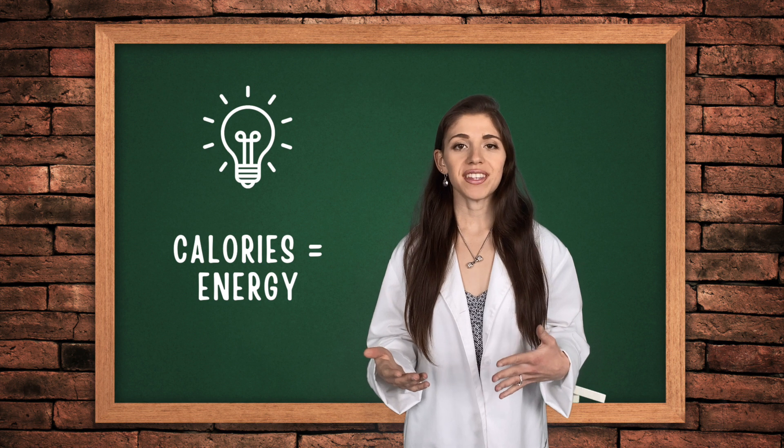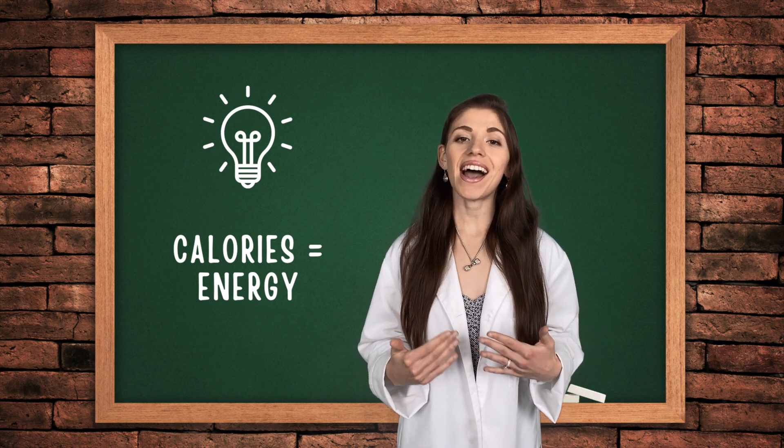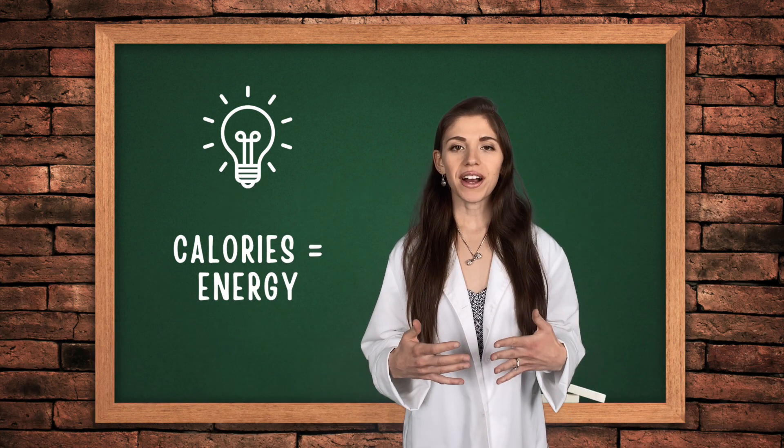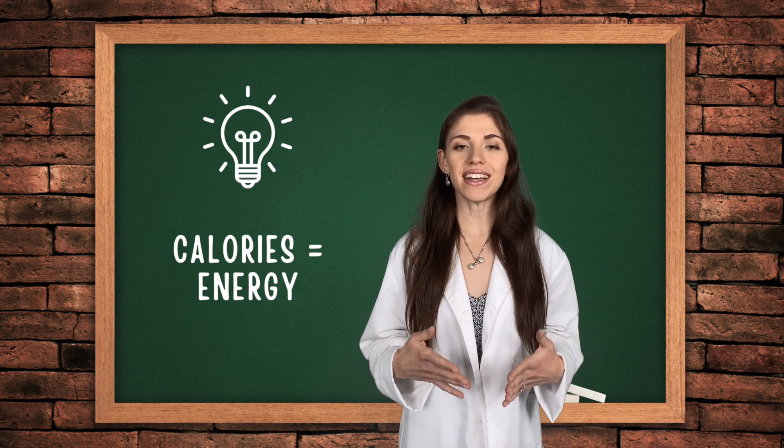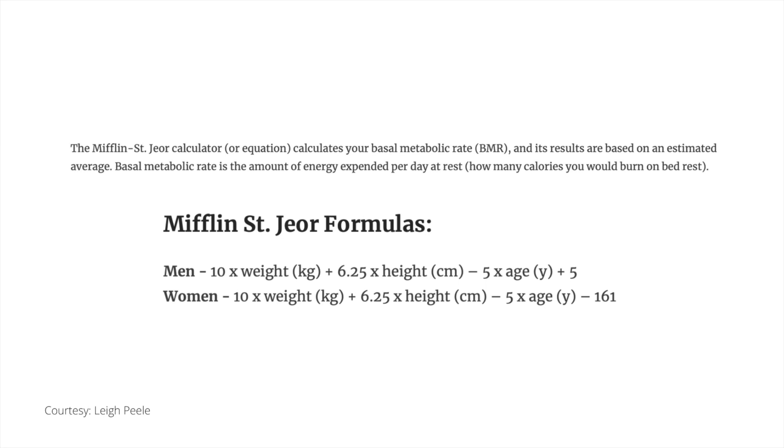This is why energy predictive equations have been created. If you do a quick Google search, you'll see that many equations exist, but personally I like to use something known as the Mifflin St. George. Mifflin St. George has been shown to estimate calorie needs within 10% of indirect calorimetry. There are two versions of the equation, one for men and one for women. I'm going to be walking you through an example, but if you want to follow along with me to calculate your energy needs, feel free to pause the video and write down the appropriate equation.